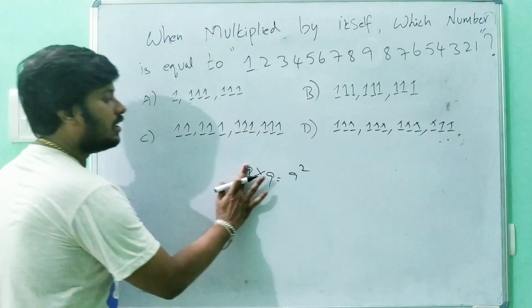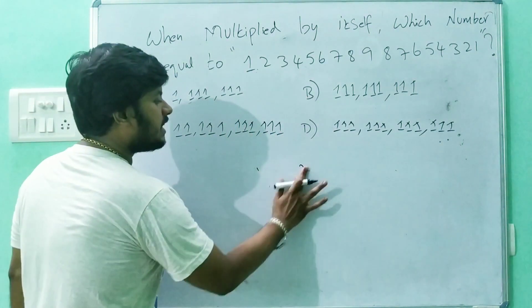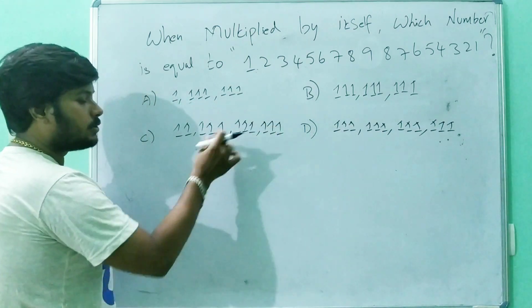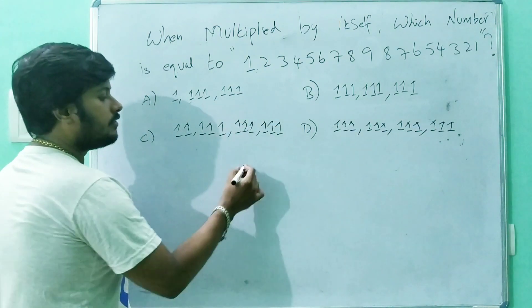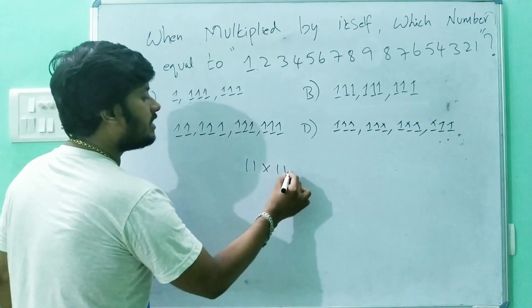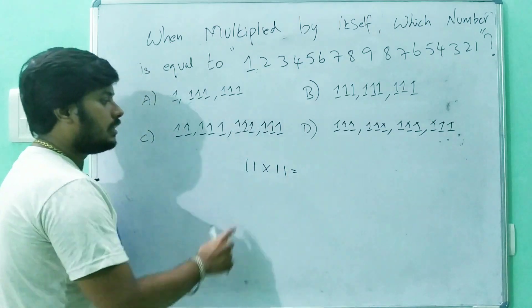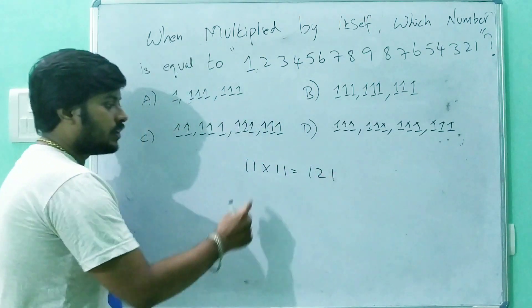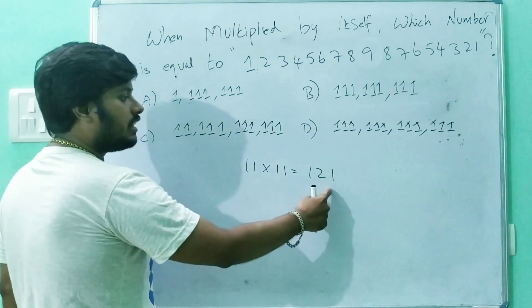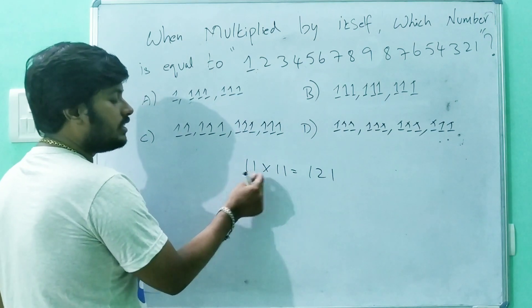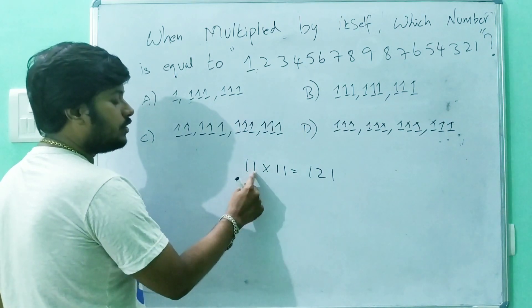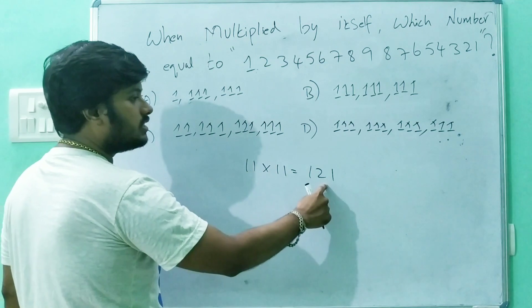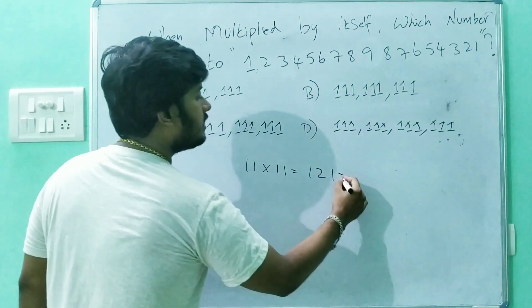Now, let's experiment with basic numbers. First, we will start with the 2-digit number: 11 into 11. 11 × 11 is 121. So, 2 digits multiplied by 2 digits gives me a 3-digit number.